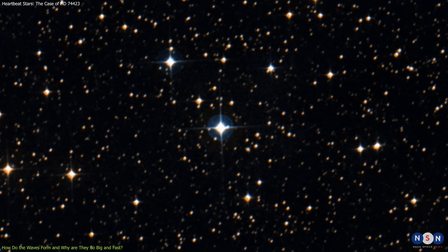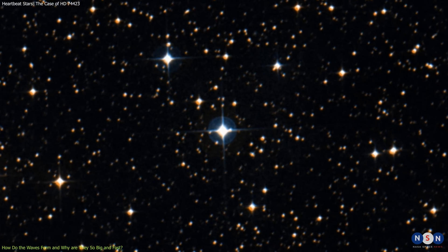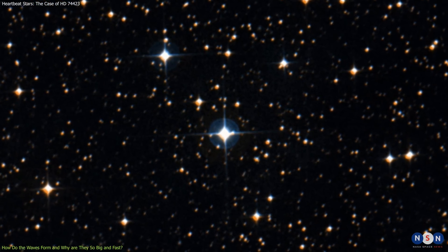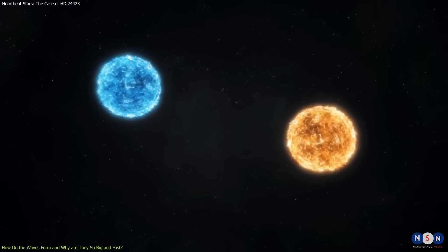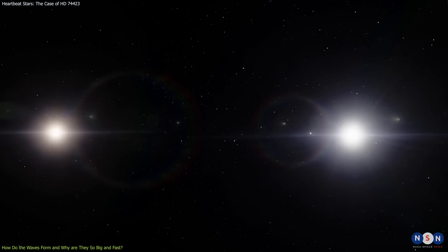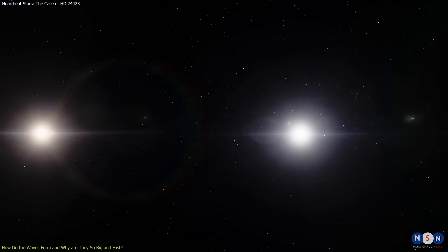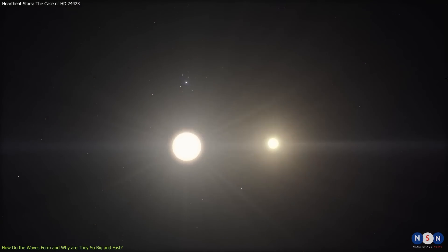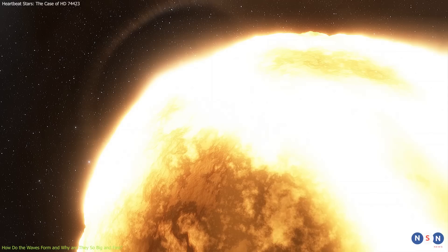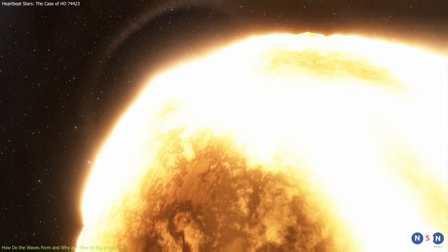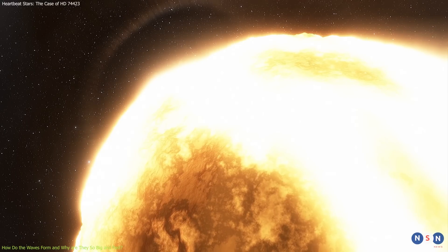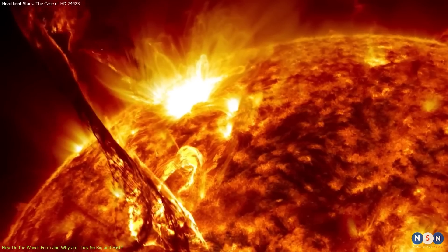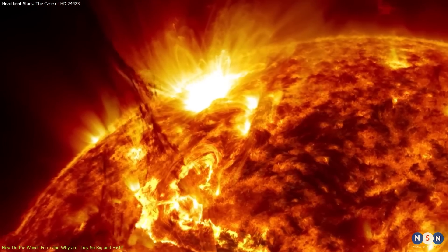In HD 74423, these factors combine to create very large and fast waves. The stars are very massive and close together, which means they have very strong gravity and tides. The orbit is very eccentric, which means the distance between the stars changes a lot during one cycle. And the rotation is very slow, which means the waves have more time to grow and accelerate. All these factors make this system a perfect storm for stellar surfing.